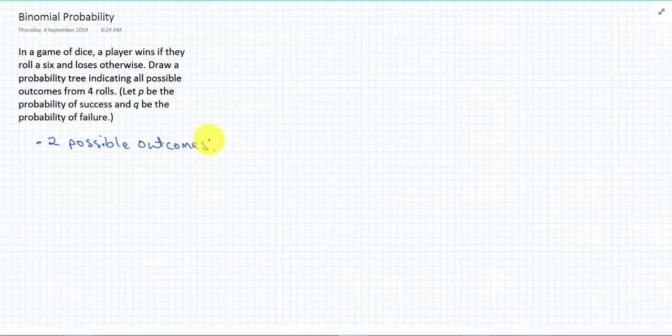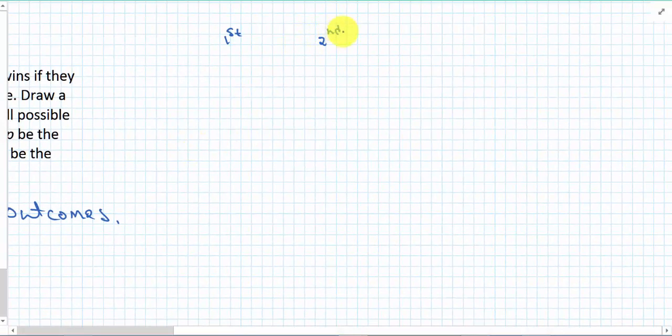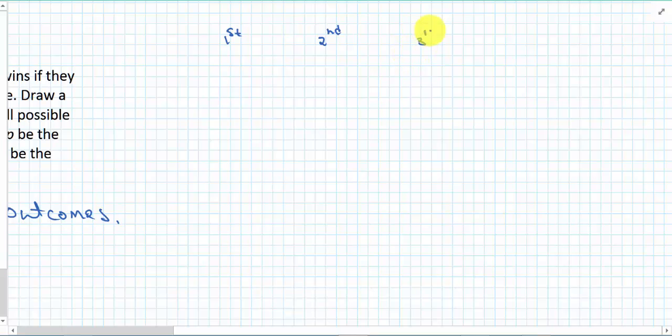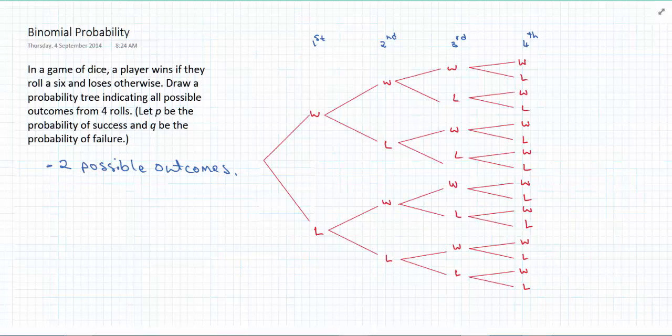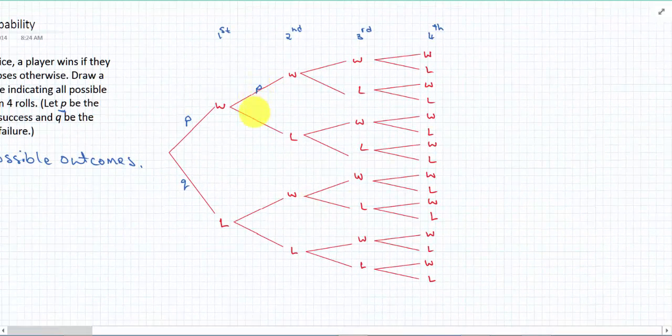So we want two possible outcomes. We've dealt with situations like this before in three unit math probability, but no one's ever talked about looking at it from a binomial and we're going to see the link. So let's draw the tree with our first, second, third and fourth task. So on the first roll of the dice we either win or lose.